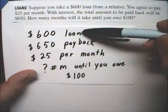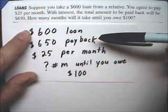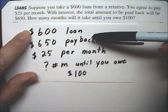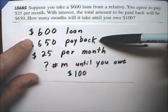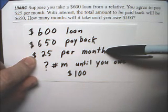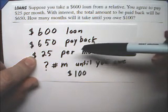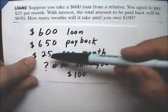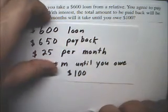It looks like this $600 isn't really going to enter our equation. We're going to need an equation that represents how much you owe, because that's the question. The important number is $650, because you have to pay back $650. And $25 per month — this is that recurring theme — we're going to multiply this times the number of months. If the month is just 1, it's $25; 2 months means you've paid back $50; 3 months would be $75, and so forth.